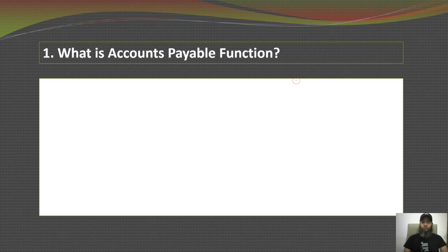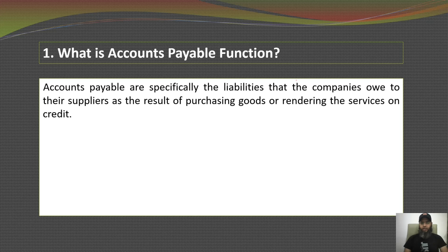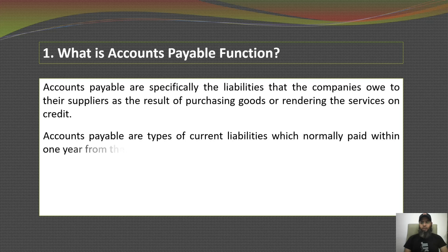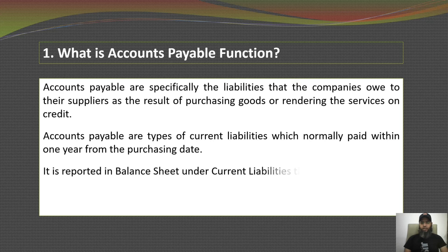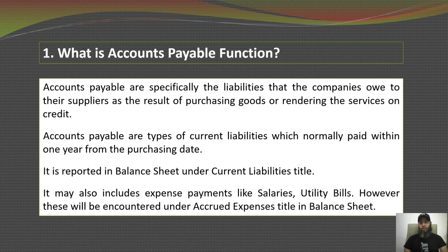Accounts payable are specifically the liabilities that companies owe to their suppliers as a result of purchasing goods or rendering services on credit. Accounts payable are a type of current liability, normally paid within one year from the purchasing date, and are reported in the balance sheet under the current liabilities title. They may also include expense payments like salaries and utility bills, though these are recorded under the accrued expenses head.